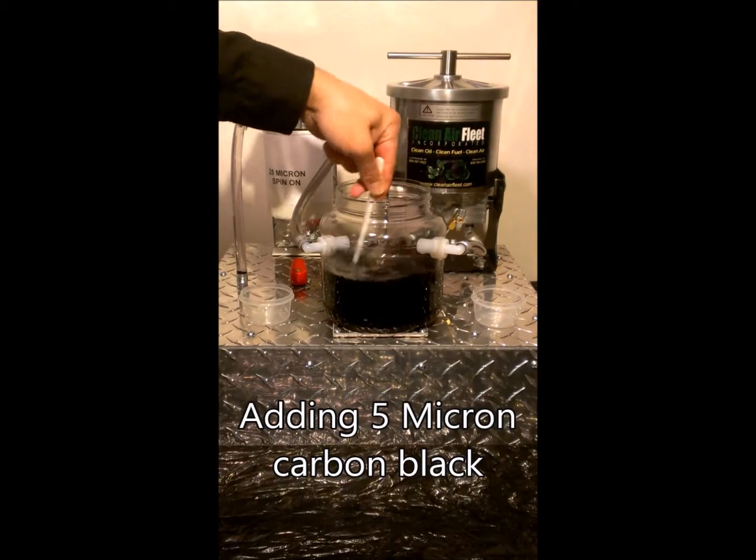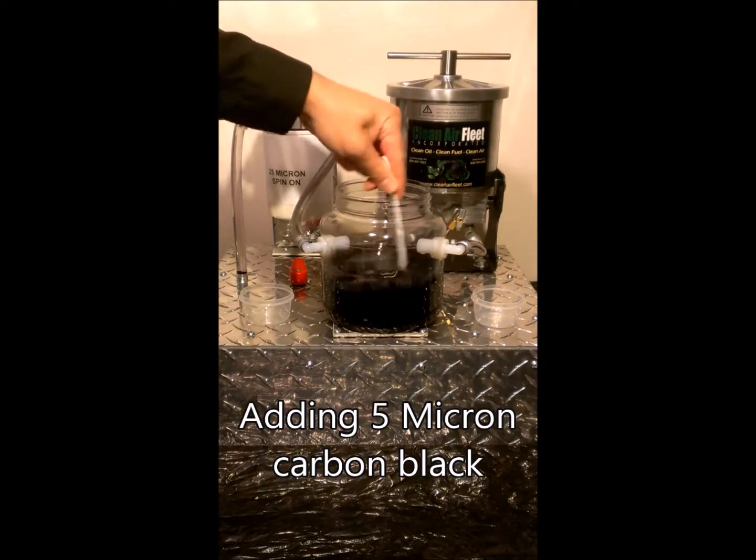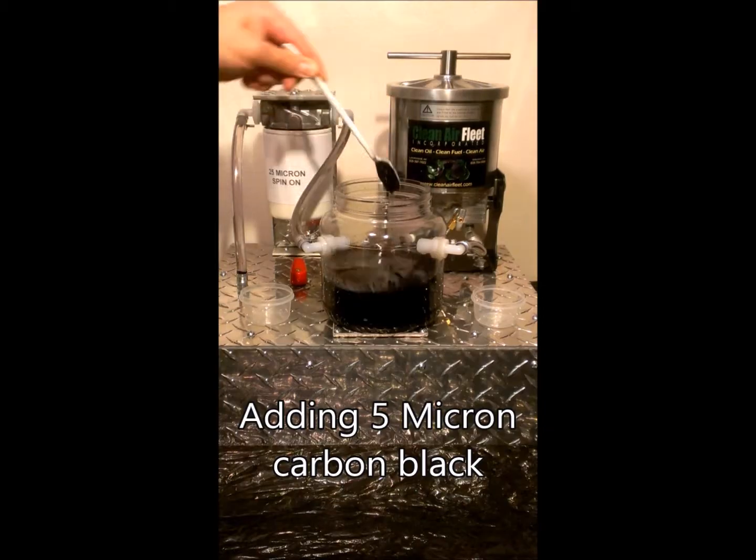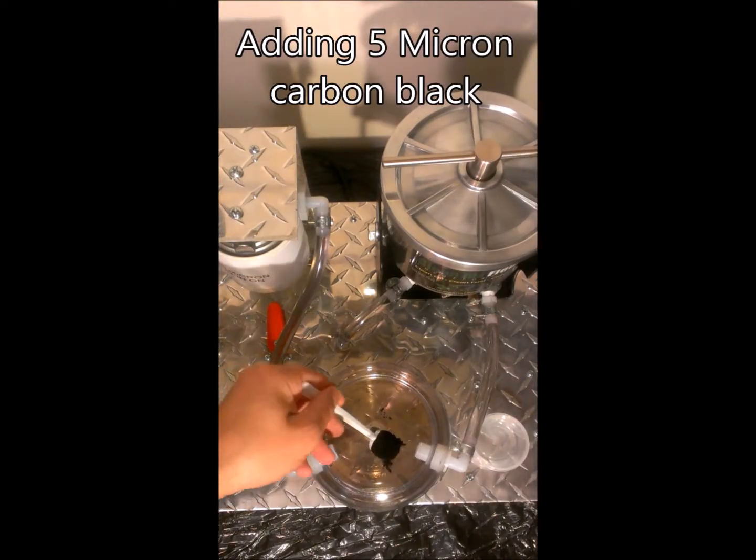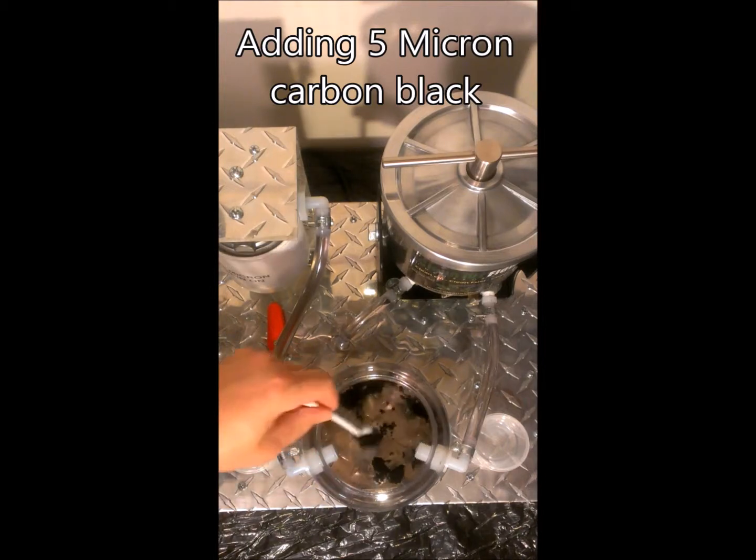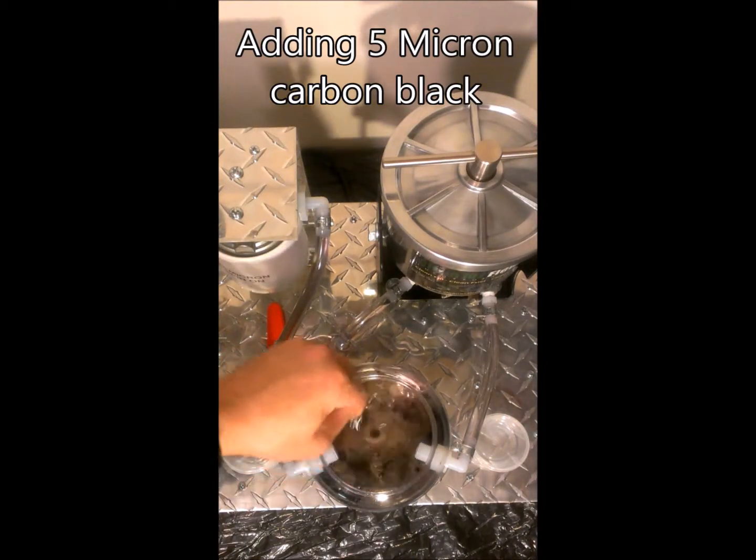A standard spin-on filter will not remove the particles smaller than 25 micron in size. From the top view adding the carbon, you can see how quickly the fine powder mixes into solution, turning the oil completely dark.